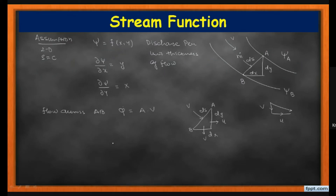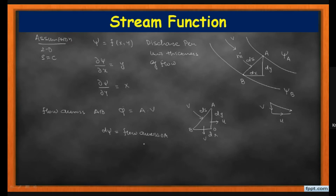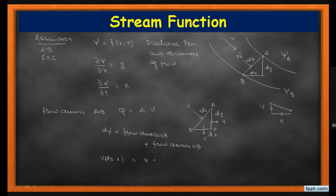Let me write the expression. The flow across AB is given by the ψ function, so I write dψ for unit thickness — because the thickness perpendicular to the plane is one. We write: flow across OA plus flow across OB equals flow across AB. For AB, the velocity is V and the area is ds × 1. For OA, we have u × dy × 1, and for OB the velocity is negative (downward direction), so it is −v × dx × 1.